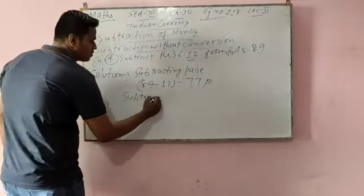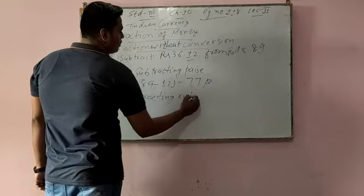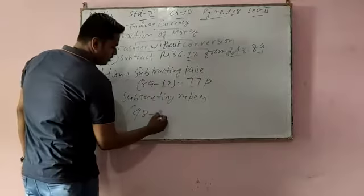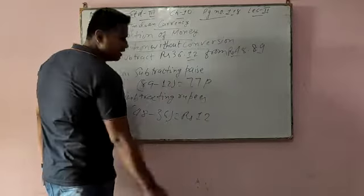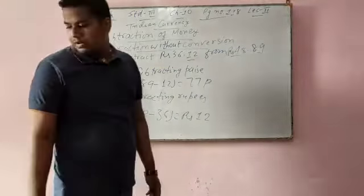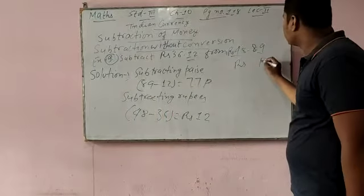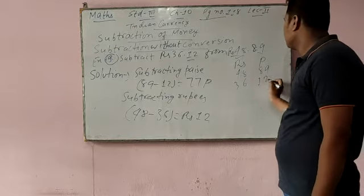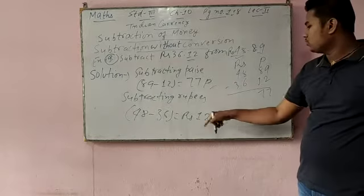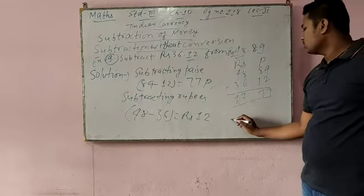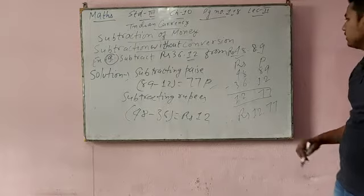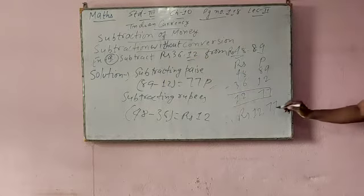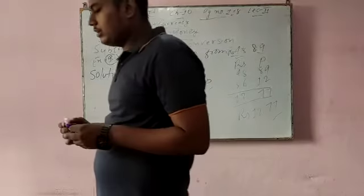Now we will subtract rupees. Second number rupees is 48, first number rupees is 36. So 8 minus 6 is 2, 4 minus 3 is 1 — that is 12 rupees. So now writing rupees and paise: 48.39 minus 36.12. Paise we subtracted, we got 27. Rupees we subtracted, we got 12. So therefore, after subtracting rupees 36 and 12 paise from rupees 48 and 39 paise, we got the answer rupees 12 and 77 paise.